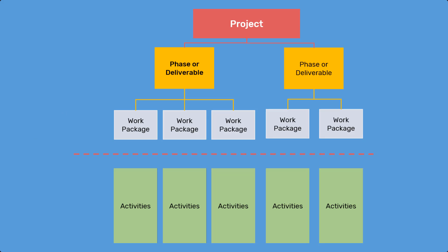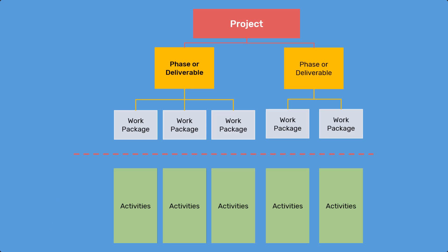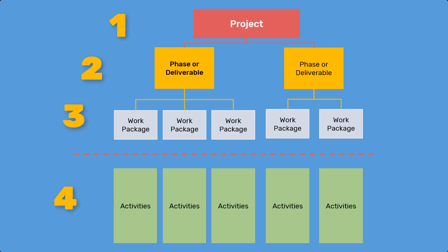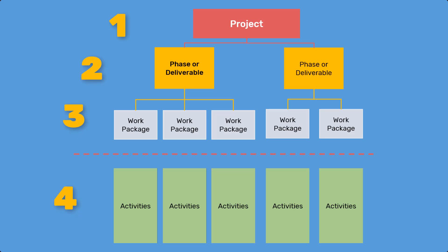A Work Breakdown Structure, or WBS, is a hierarchical decomposition of a project into smaller, more manageable components. It provides a visual representation of the project scope, deliverables, and activities. Each level of the WBS breaks down the project into smaller, more detailed tasks, making it easier to plan, organize, and manage the work.